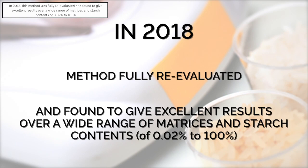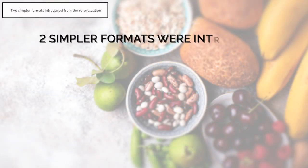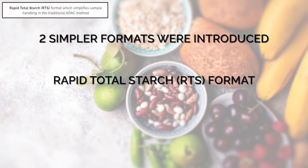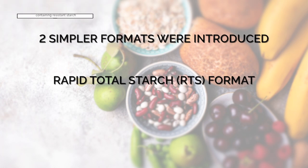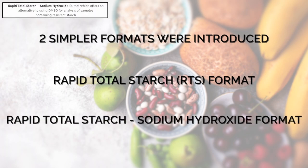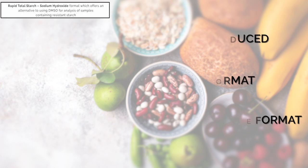The method was validated for starch contents of 0.02% to 100%. In that study, two simpler formats were also introduced: the Rapid Total Starch RTS format, which simplifies sample handling in the traditional AOAC method, and the Rapid Total Starch Sodium Hydroxide format, which offers an alternative to using DMSO for analysis of samples containing resistant starch. In this video, we are focusing on these two simplified formats.